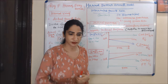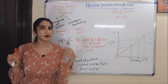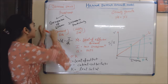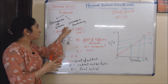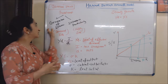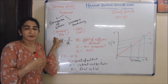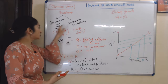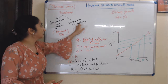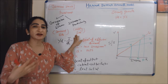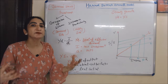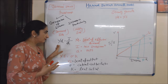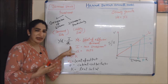Now we discuss Domar's views. Domar gave more importance to investment. According to Domar, investment has two functions: generation of income and increasing productivity. Generation of income is a demand-side effect — when investment increases income, it automatically increases demand. Increasing productivity is a supply-side effect — when productivity increases, there is an increase in production of goods and services.